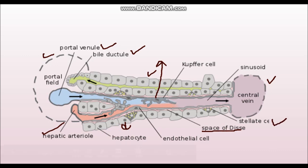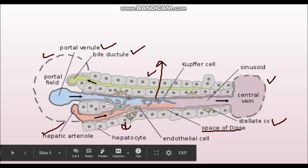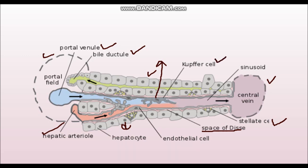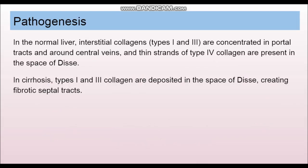Stellate cells are responsible for fibrogenesis in cirrhosis. Kupffer cells also play a role. In normal liver, type 4 collagen is present in the space of Disse. However, in cirrhosis, type 1 and type 3 collagen are present in the space of Disse, creating fibrotic septal tracts. Normally, type 1 and type 3 collagen in the liver are concentrated only in the portal tract and central vein.